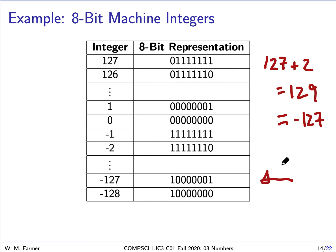There are two approaches to handling this. One approach is to just return the modular result — giving back minus 127 — and it's up to the user to realize that overflow occurred. The other approach is to monitor what's happening and when overflow is detected, tell the user there's overflow rather than return an incorrect answer. How we do arithmetic with machine integers is a little bit subtle — we can use modular arithmetic and compute very fast, but operations like 127 plus 2 won't give 129, and depending on the implementation, may silently return minus 127.